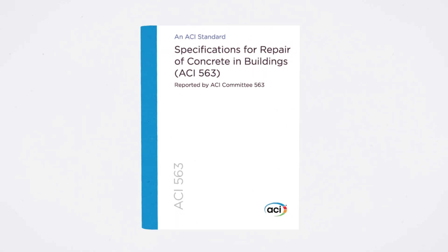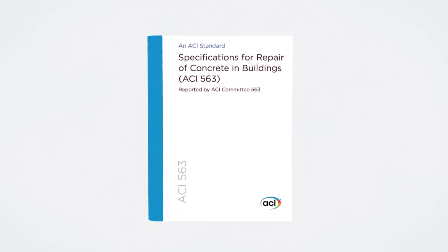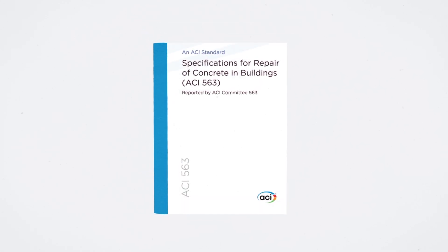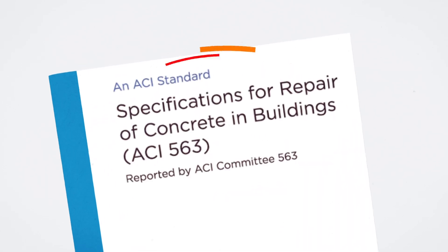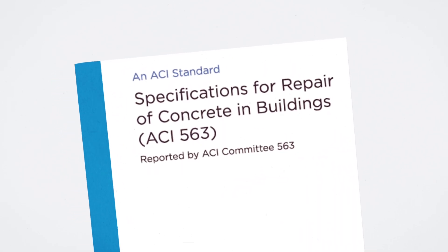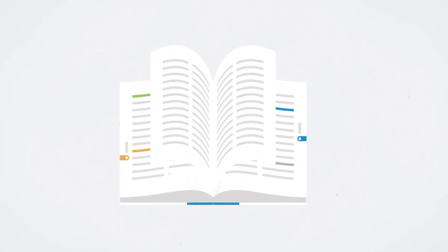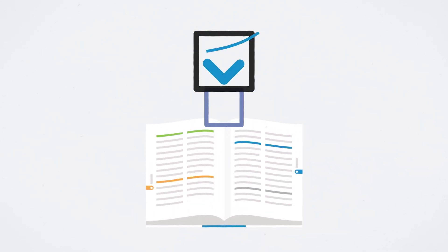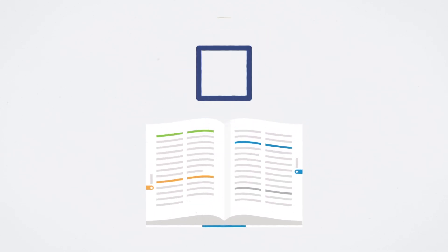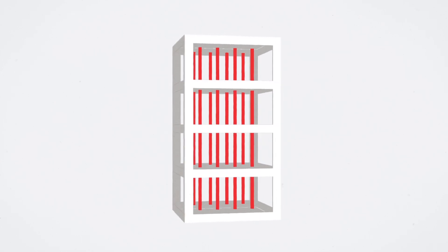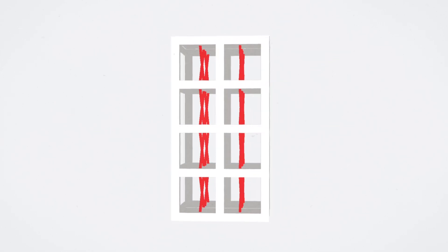For those working on structural concrete repair and rehabilitation projects, check out ACI 563 – Specifications for Repair of Concrete in Buildings. This reference specification includes mandatory and optional requirement checklists for designers and covers general construction requirements for all repair work, shoring and bracing, and much more.